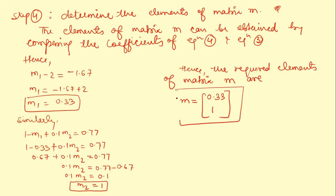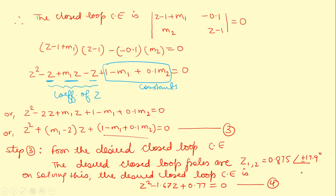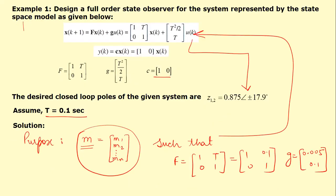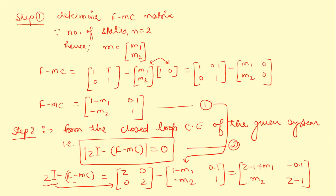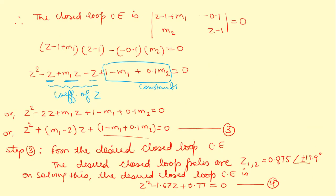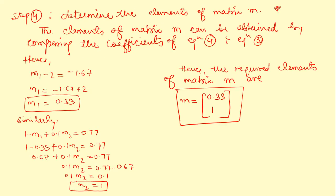This is our solution for the full order state observer design. We obtained the F minus MC matrix, then the closed loop characteristic equation in step two, the desired closed loop characteristic equation from the given poles in step three, and determined the required matrix M elements in step four. This is how we solve a numerical for the full order state observer.